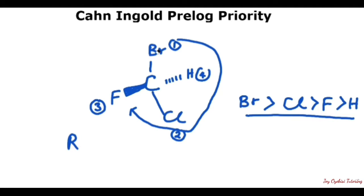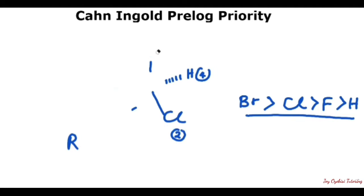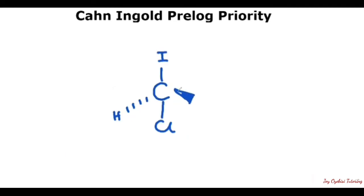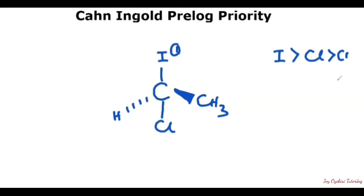The second example has iodine, chlorine, a methyl group, and hydrogen. The highest priority here is the iodine — we'll give it 1. If we follow the ranking, iodine is greater than chlorine, which is greater than CH3, and CH3 is greater than hydrogen. So iodine is 1, chlorine is 2, CH3 is 3, while the hydrogen is 4.